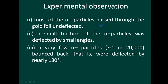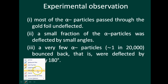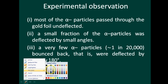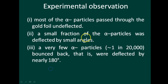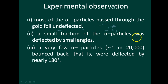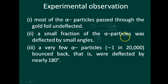Most of the alpha particles passed through the gold foil undeflected — that is, without any deflection, they moved straight through. That is the first observation. In the second observation, a small fraction of the alpha particles was deflected by small angles.